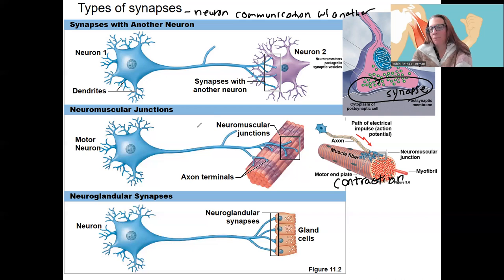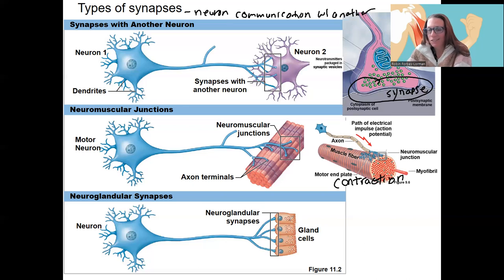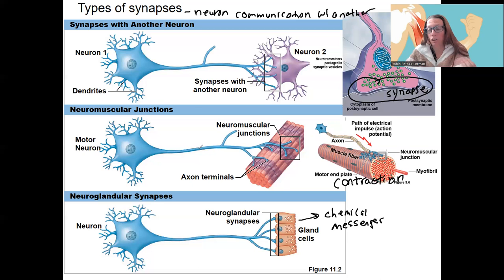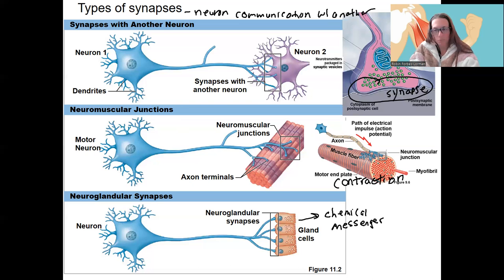There are also neuroglandular synapses. We won't go into detail on these, but neurons also need to signal other structures for motor output — for example, endocrine glands. These are gland cells that release exocrine or endocrine chemical messengers when signaled by a neuron. So it's important to think about how neurons communicate with different structures. The neuromuscular junction will be the focus of this week, and synapses to other neurons will be covered in a separate chapter in a couple of weeks.